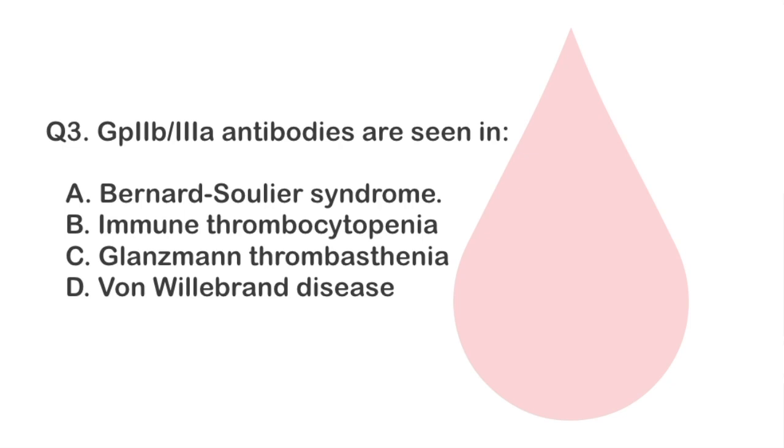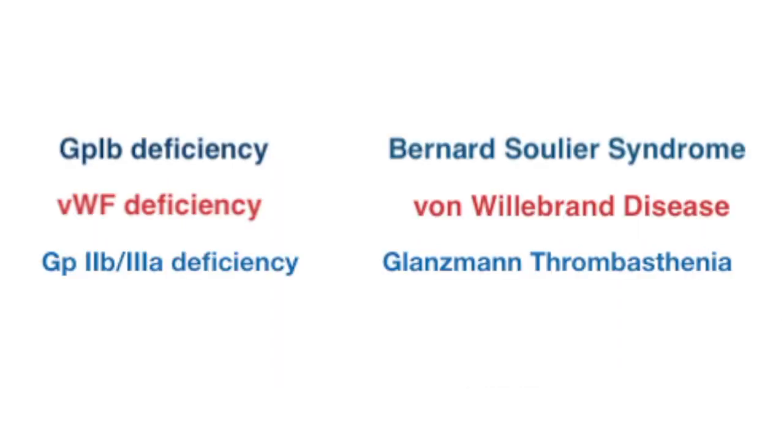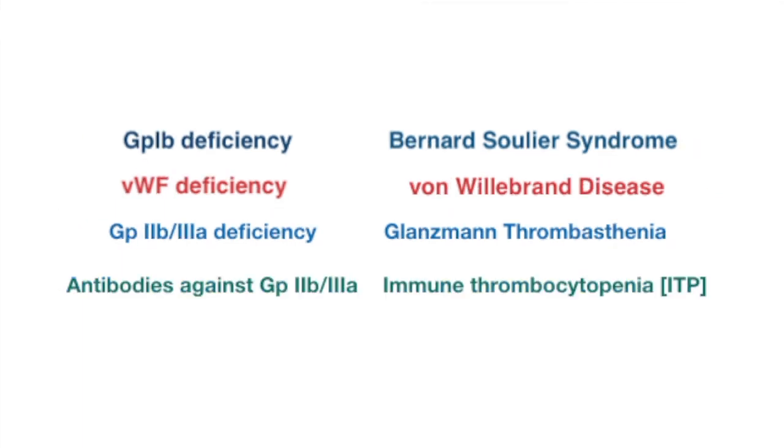The correct answer is immune thrombocytopenia. We just learned that Bernard-Soulier syndrome occurs due to the absence of GP1B and von Willebrand disease occurs due to the absence of von Willebrand factor. Glanzmann thrombasthenia is the result of a deficiency of GP2B3A, while immune thrombocytopenia is caused by antibodies against GP2B3A.